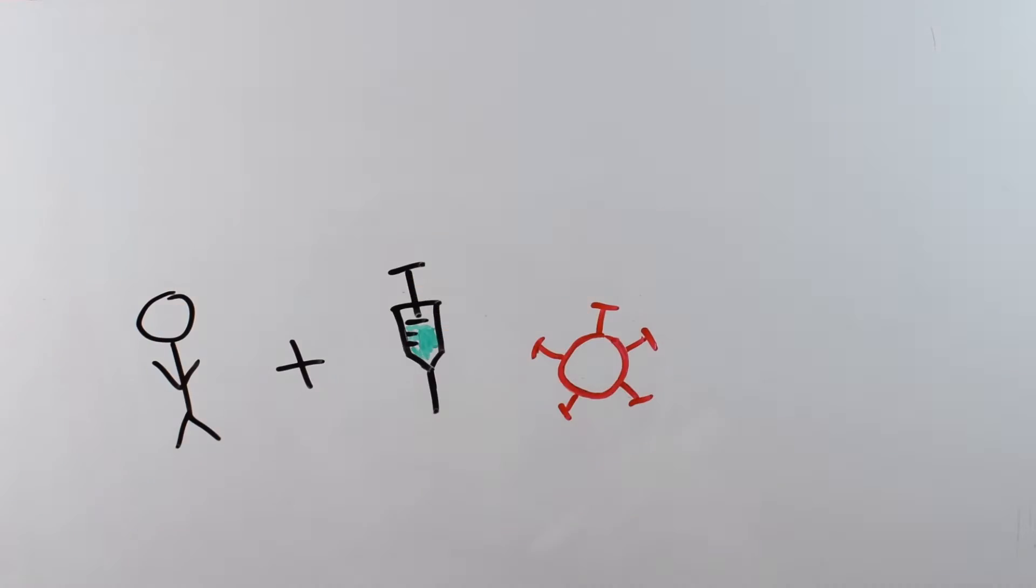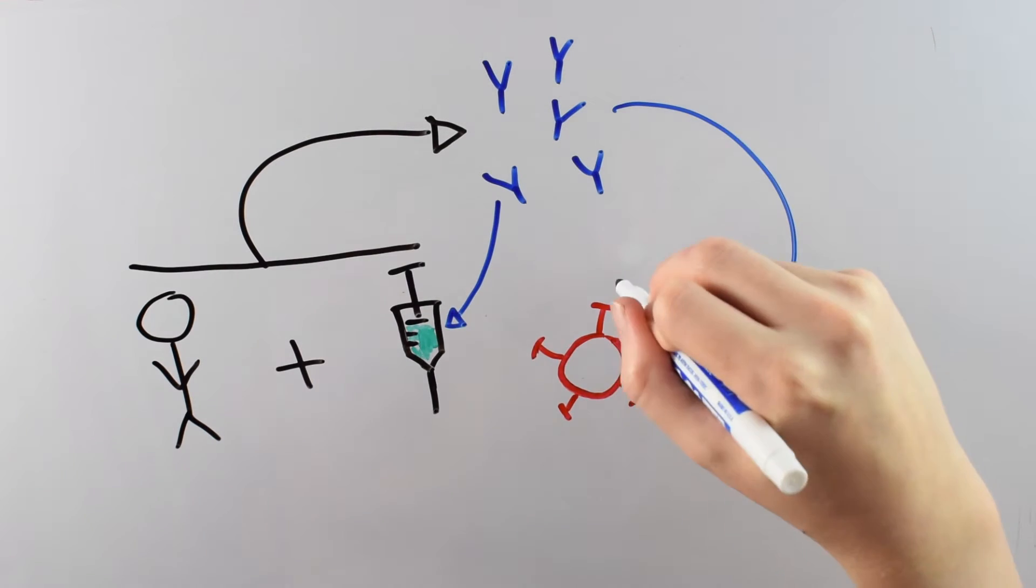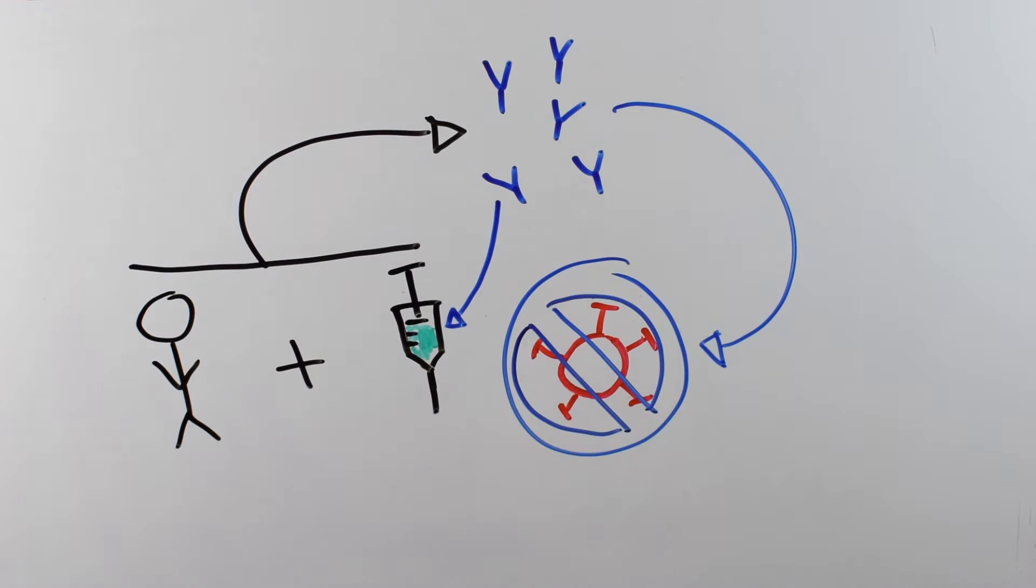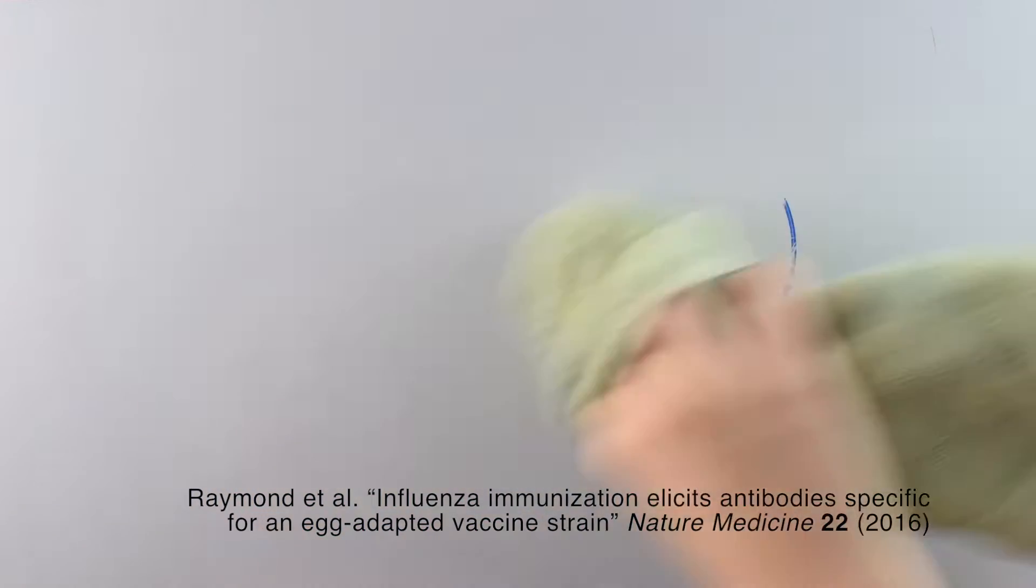When we get the flu vaccine, it causes us to make antibodies against the flu. These antibodies are a protection for when we come across the virus in our daily lives. But we can only make antibodies against what were presented in the vaccine. A new paper from Nature Medicine suggests that the antibodies we're making aren't as good as they could be.